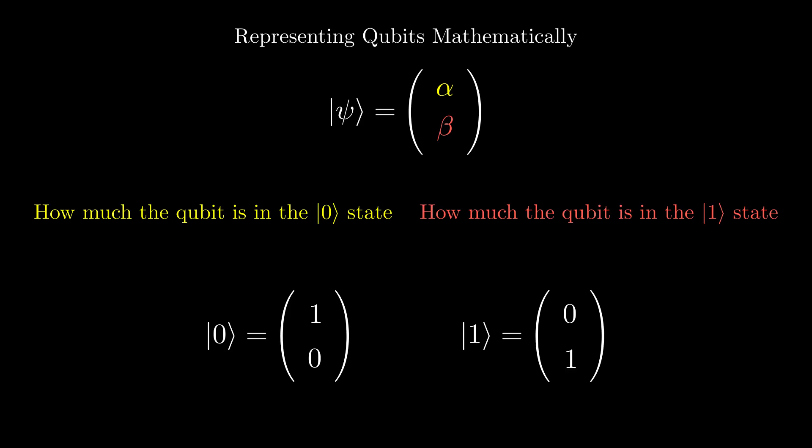If a qubit is in both the zero and one state, so it has non-zero numbers in the matrix, then we say it is in a superposition of zero and one, since it is both of the states at the same time.